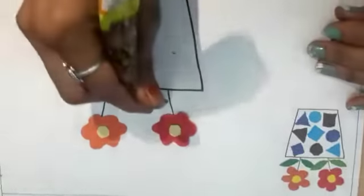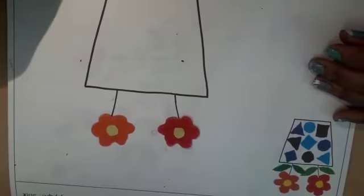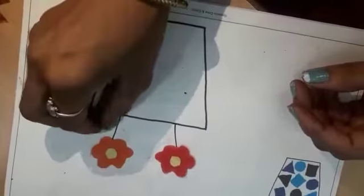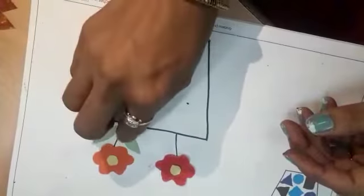Again spray the fevicol and make a petal of a flower from green color paper and paste it on. Like this way.